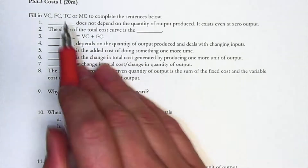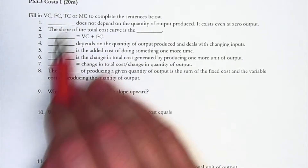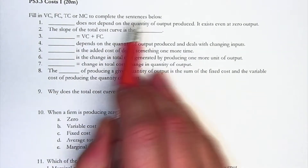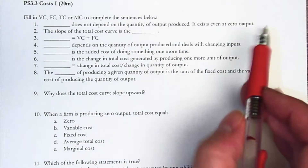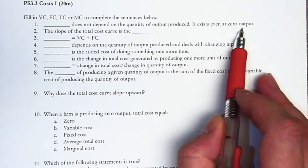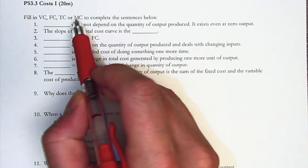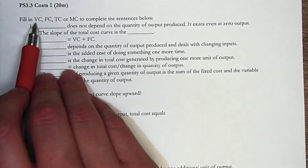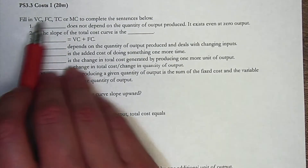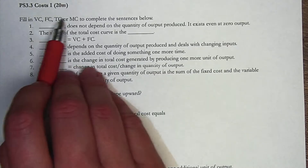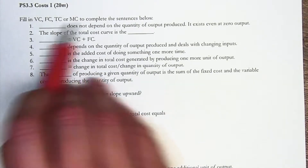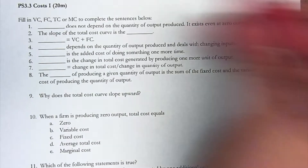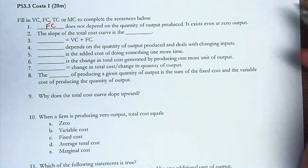We're going to use VC, FC, TC, or MC to complete these sentences. 'Blank does not depend on the quantity of output produced. It exists even at zero output.' MC does depend, VC does depend, and TC depends on VC, so we can rule out TC. FC is the only one that doesn't depend on the quantity of output produced, and it exists at zero output — fixed costs always exist.